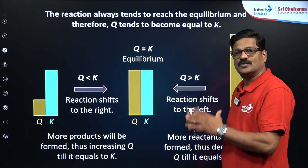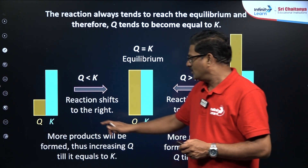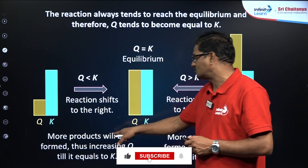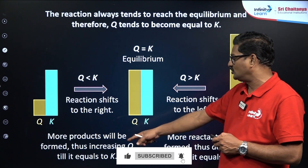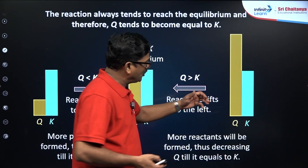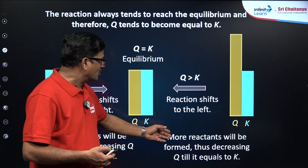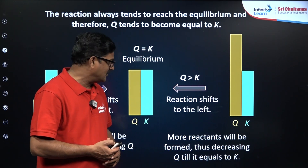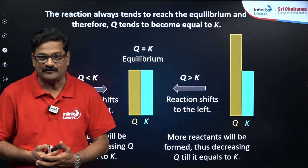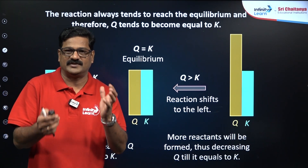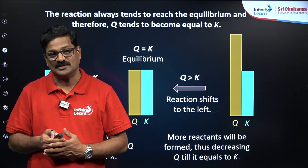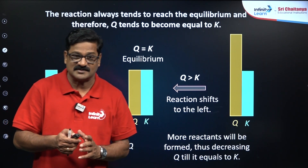In summary: when K is greater than Q, more products will be formed, increasing Q until it equals K. When Q is greater than K, more reactants will be formed, decreasing Q until it equals K. So the behavior of the equilibrium is governed by the reaction quotient. Focus on these key relationships.